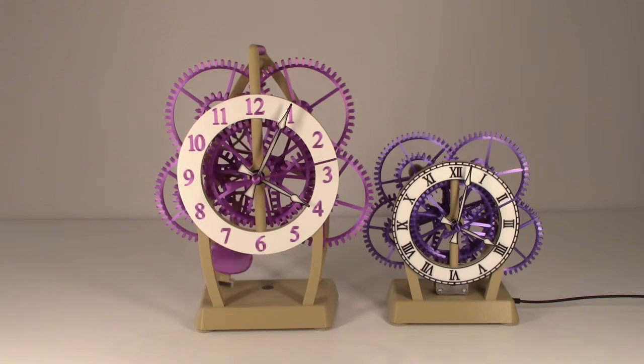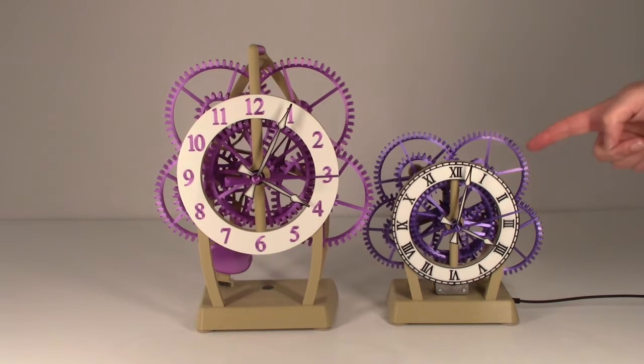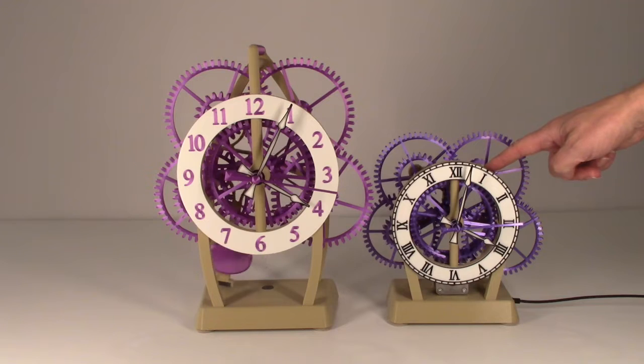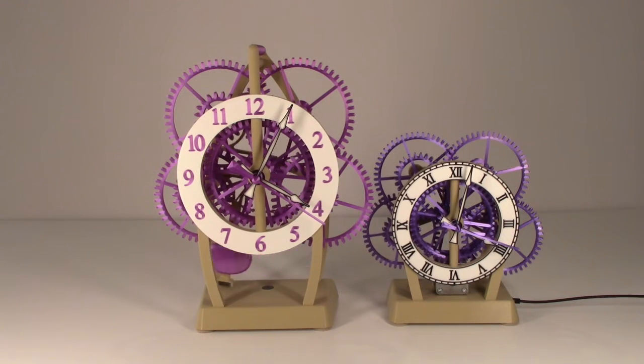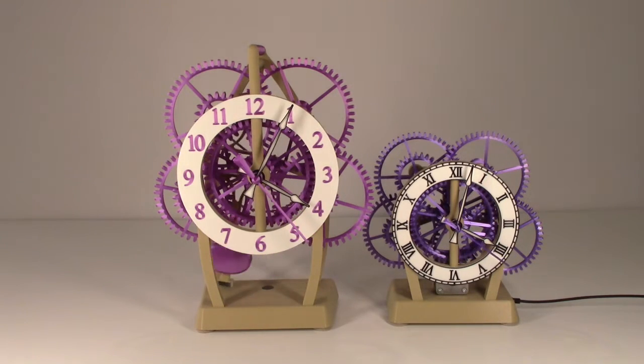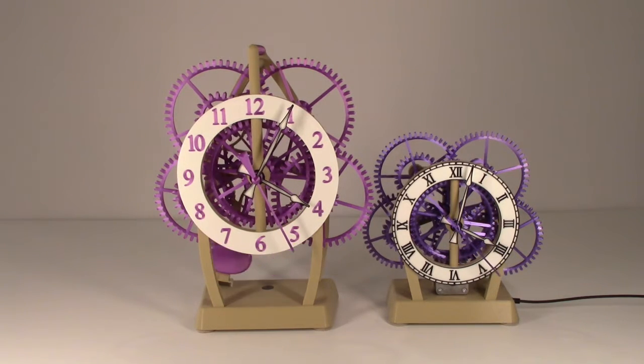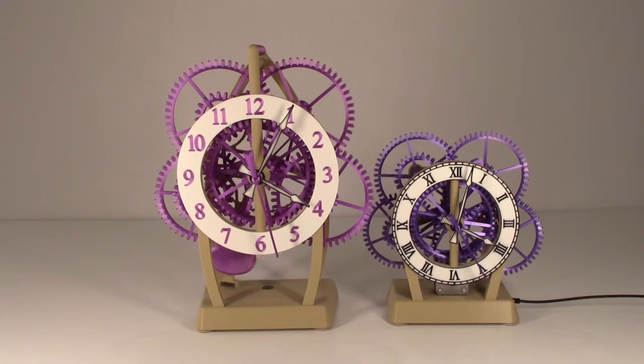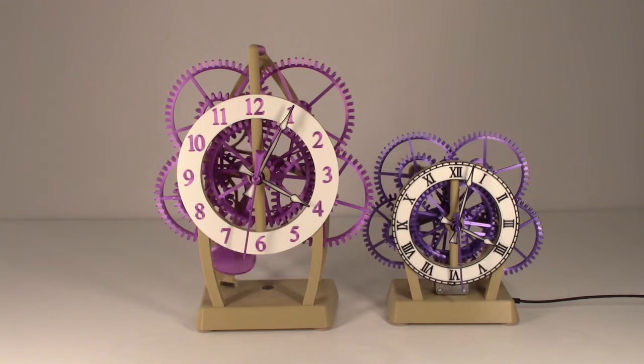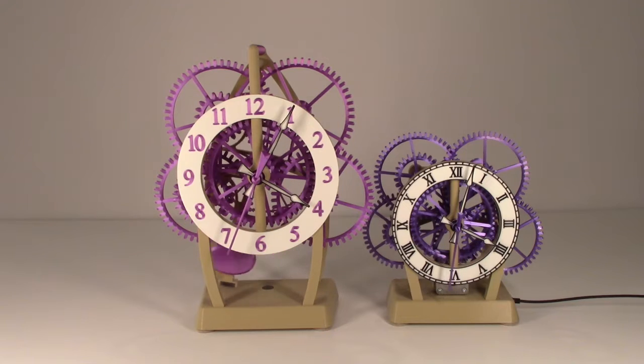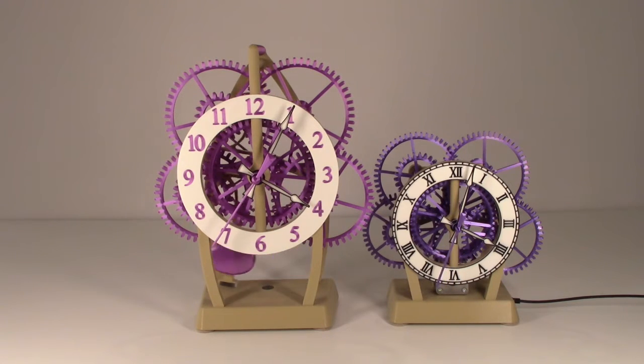It ends up being quite a bit larger compared to my smaller desk clock. The desk clock can be printed on a Prusa Mini. The pendulum drive clock needs to be printed on a larger printer. The dial is an 8 inch circle, so that pretty much sets a little bit over 200 millimeter square build area.